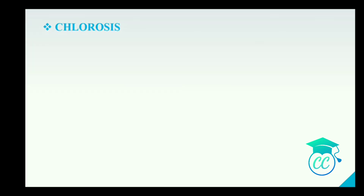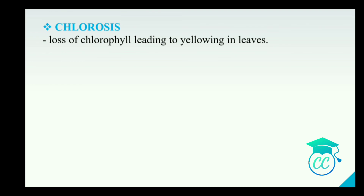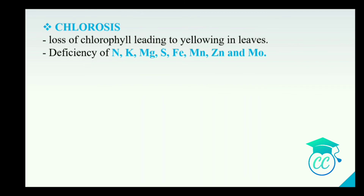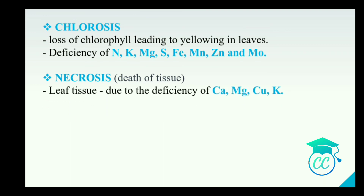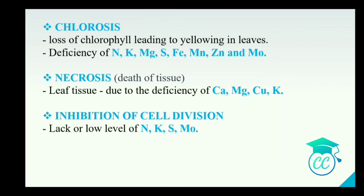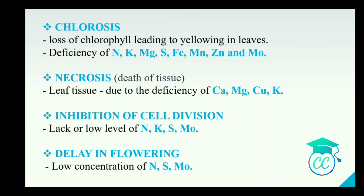Chlorosis is due to the loss of chlorophyll leading to yellowing of the leaf. It is caused by deficiency of nitrogen, potassium, magnesium, sulfur, iron, manganese, zinc and molybdenum. Necrosis is due to death of tissue in leaves and is caused by deficiency of calcium, magnesium, copper and potassium. Inhibition of cell division is due to low levels of nitrogen, potassium, sulfur and molybdenum. Delay in flowering is due to low concentration of nitrogen, sulfur and molybdenum.